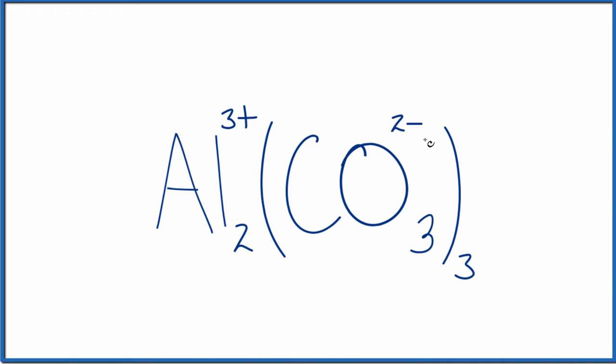And we have three of these carbonate ions. Since it's ionic, the net charge of the compound here needs to add up to zero. 2 times 3 plus, that's 6 plus. 3 times 2 minus is 6 minus. So we have a net charge of zero.